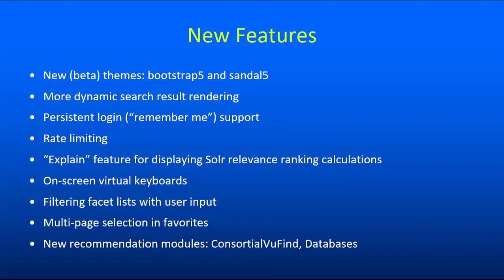We've also added a couple of new recommendation modules. Social ViewFind can be used to connect to the ViewFind API of a third-party consortium — useful if you are at a library which interacts with a consortium that uses a shared ViewFind-based index for interlibrary borrowing and lending. There's also the Databases module which can provide a list of databases that seem relevant to the search results, driven either with the LibGuides API or through local configuration.